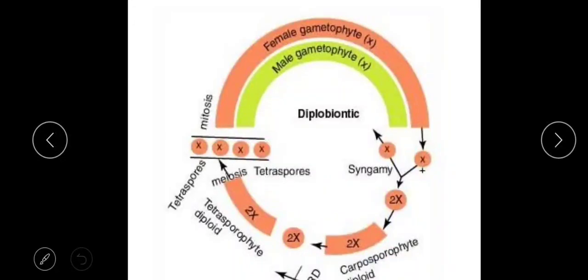Welcome to today's video. We will see the last type of life cycle seen in algae — the diplobiontic life cycle. This is the life cycle in which the haploid phase is followed by two successive diploid generations. This type of life cycle is found in the algae Polysiphonia, which we will study in detail. The type of alternation or life cycle seen in Polysiphonia is diplobiontic.